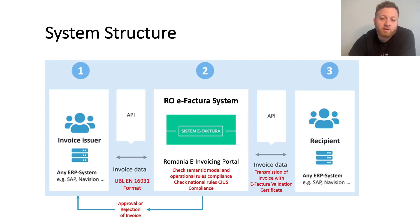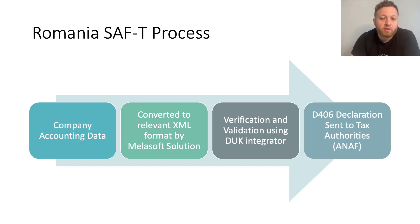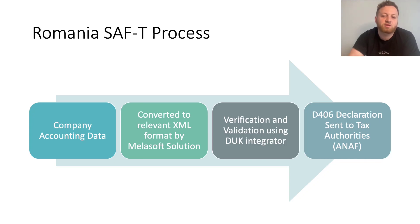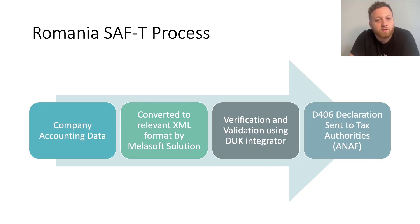Here we have the general architecture of the system. On one side we have the invoice issuer, and on the other side we have the recipient. Both are connected to the government portal using API services. Our Malasoft SAF-T solution helps you convert your accounting data into an XML file. Thanks to the SAF add-on solution, all steps are completed in the customer system before the files are uploaded to the DUK integrator for file verification, and the SAF-T report is ready to submit to the tax authorities.